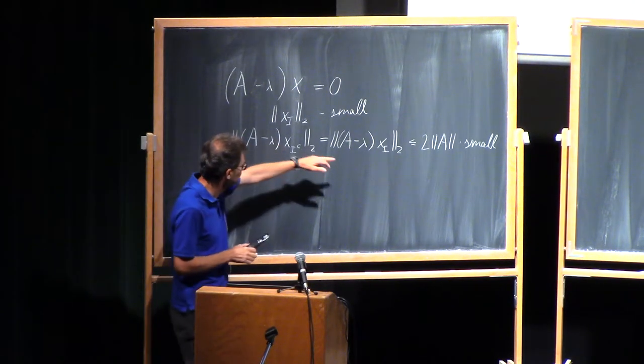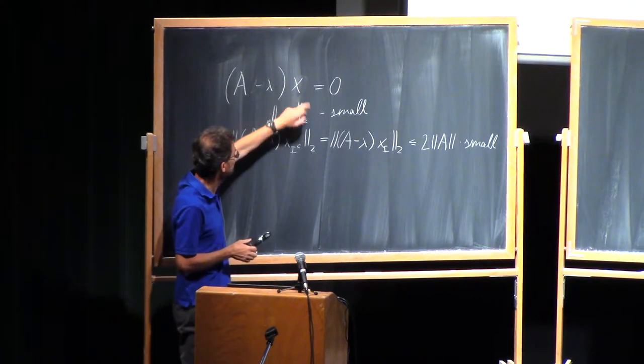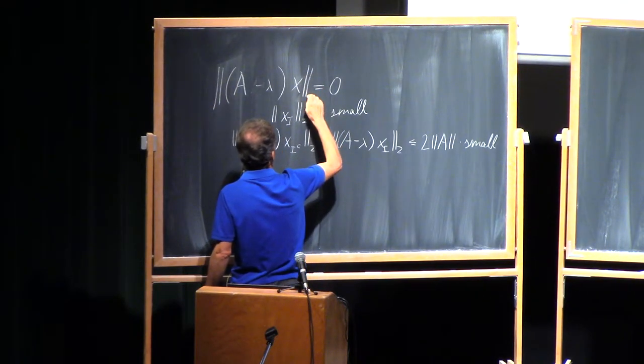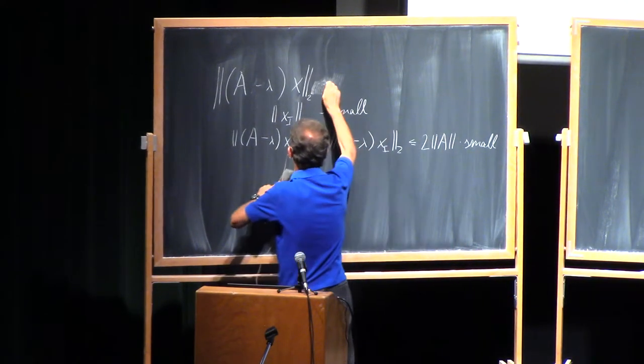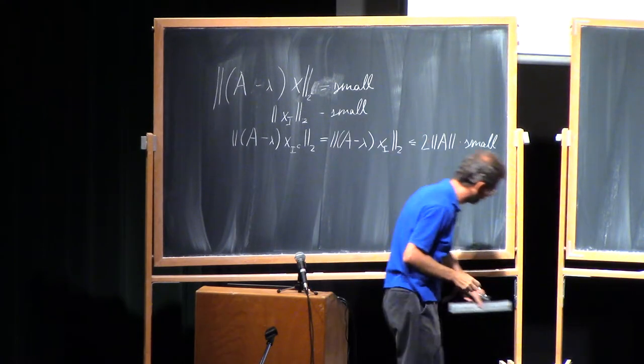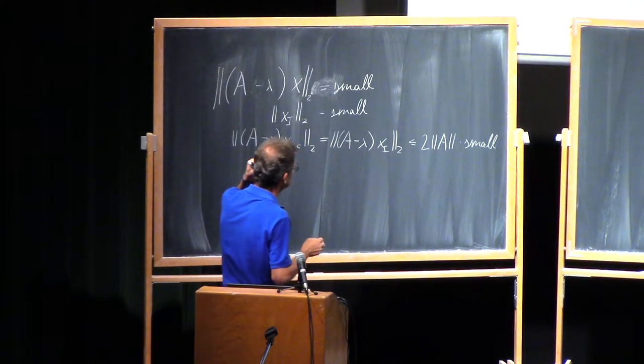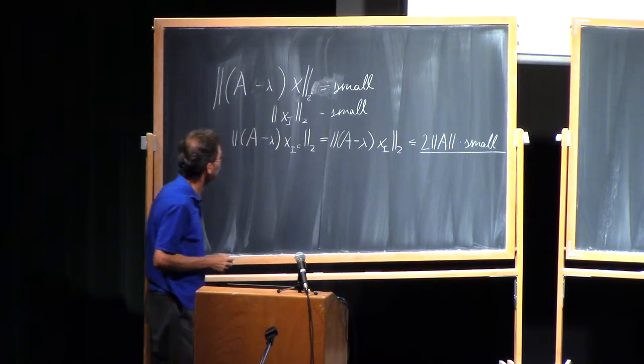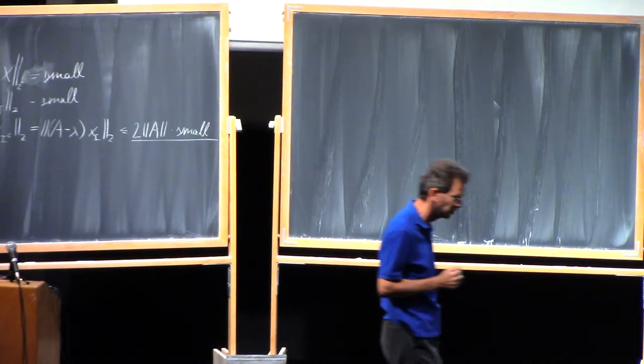And since we are estimating the probability of the inequality instead of equality, I don't have to require that A minus lambda X is precisely zero. I can replace it by saying that the norm of this difference is small, appropriately small so that it would not affect what we have here.